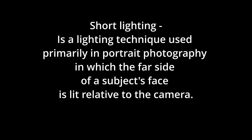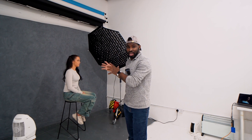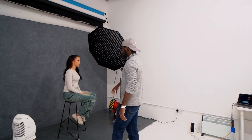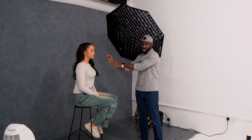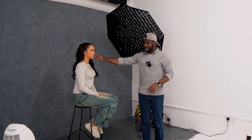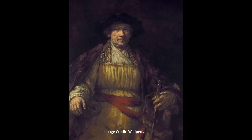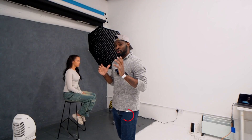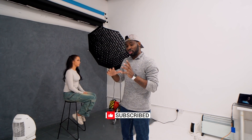Short lighting is where the side furthest away from the camera is the most lit area. This part of Dominique's face will be the most lit because the light is all coming from this direction, and it also casts a really nice triangular shape on the other side of the face. That is also known as Rembrandt lighting, made famous by the painter Rembrandt. Broad lighting is where the light is coming more from the other direction, but I will show you that in a minute. Let's now focus on short lighting.